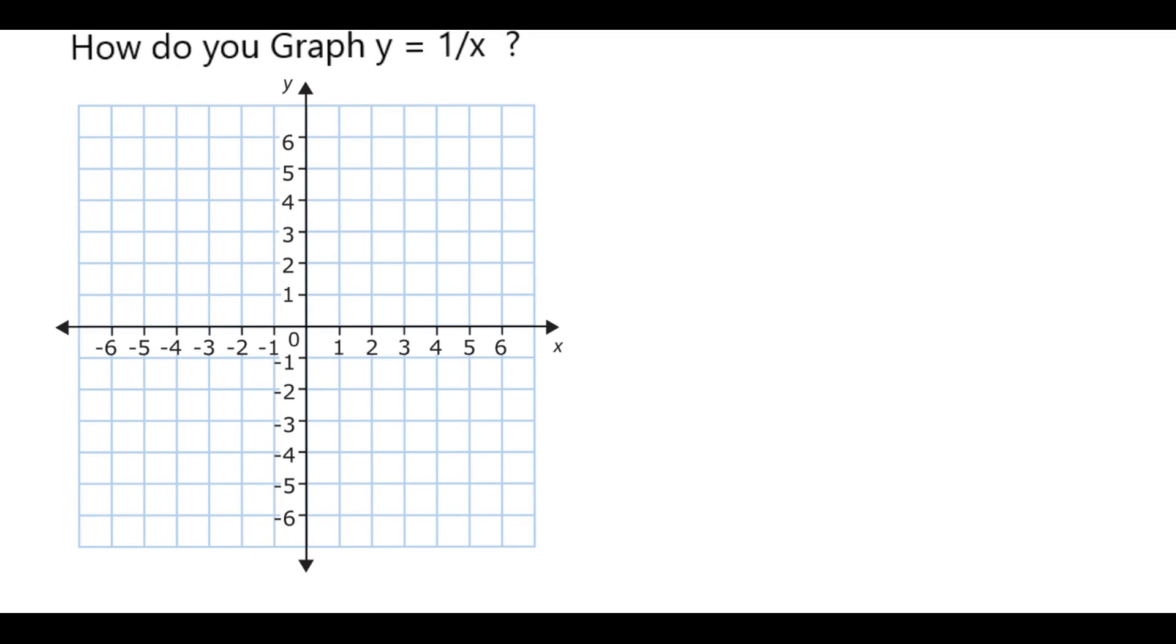A good way to graph anything you're not completely sure about is with a table of values. We could pick any values of x, but let's start with ones that are small and close to zero and see what happens with them. Then we can take more from there to develop what our graph looks like.